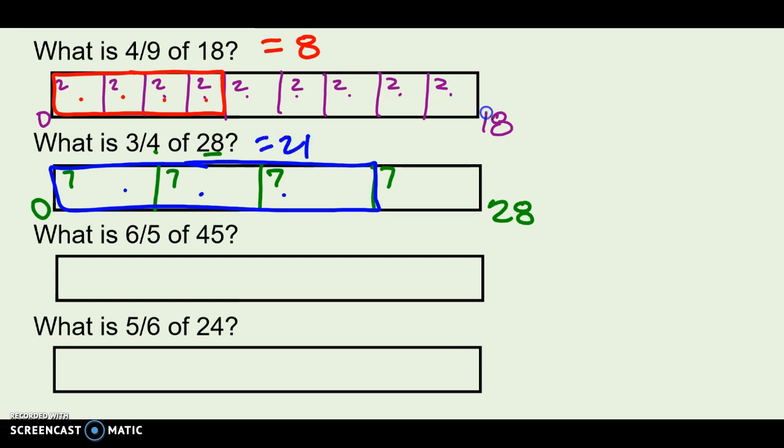Or 6 fifths of 45. Go ahead, take this whole bar and split it up into fifths and see how many would be in each section. Then we'll talk about how big 6 fifths is. Pause for a second, and then we'll come back and check. I should get each of these sections is 9. Right? 9, 18, 27, 36, 45 to make a total of 45 here.